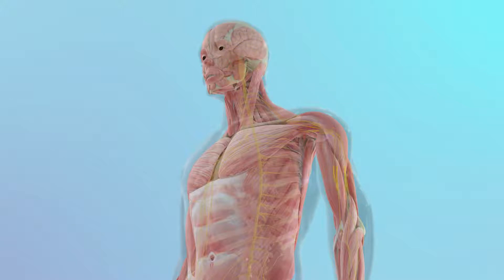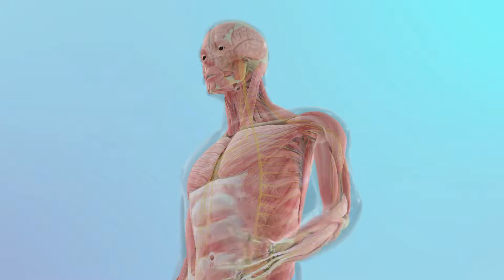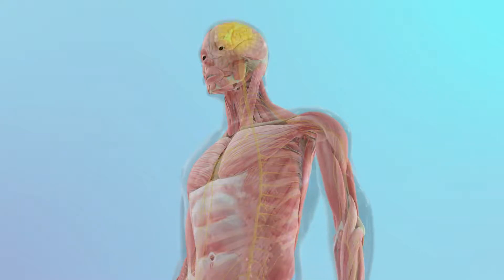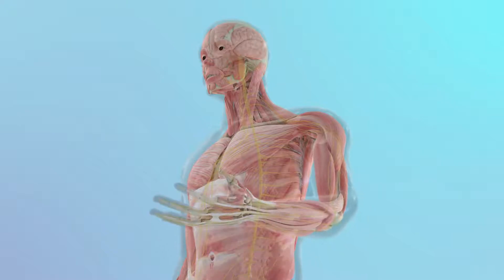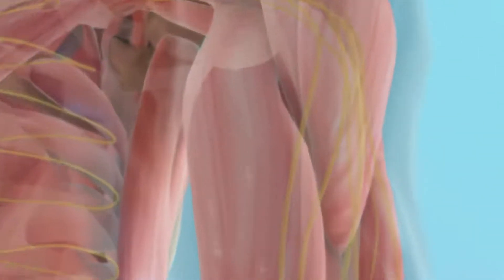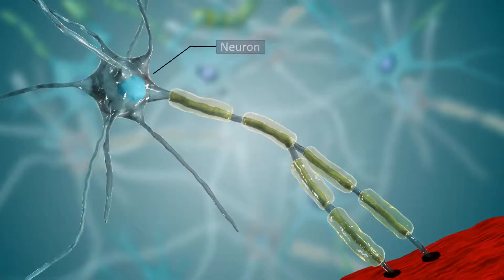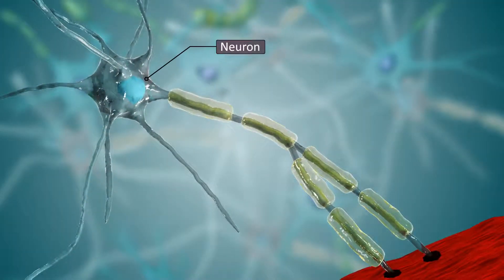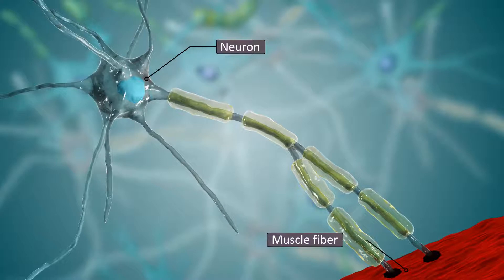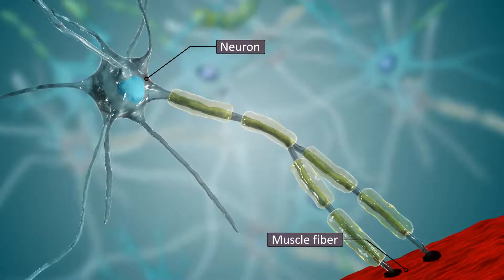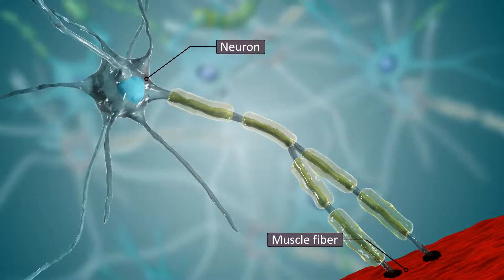Because our neurons and muscle fibers have the unique ability to generate rapid electrical changes in their membrane. These changes are known as membrane potentials. An alteration in the electrical potential surrounding the cell membrane causes a neuron to produce a nerve impulse or triggers muscle fibers to contract. Neurons and muscle fibers are referred to as excitable cells.